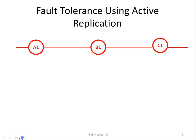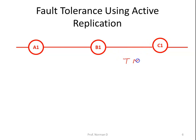Now we will see more detail about active replication. Fault tolerance in electronic circuits can be achieved using active replication. Consider a circuit with three devices A, B, and C placed in sequence. If any one of them is faulty then the output will also be faulty. Active replication can be achieved using something called Triple Modular Redundancy, or TMR.